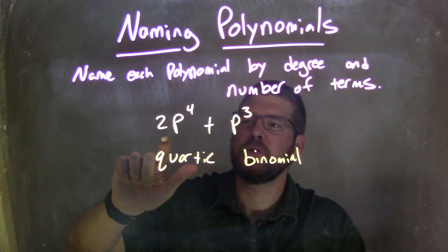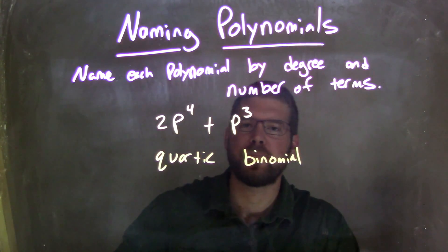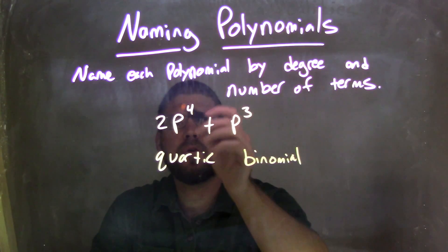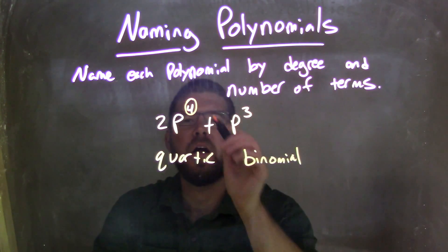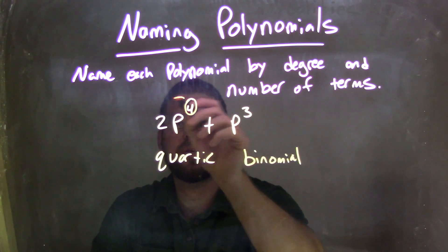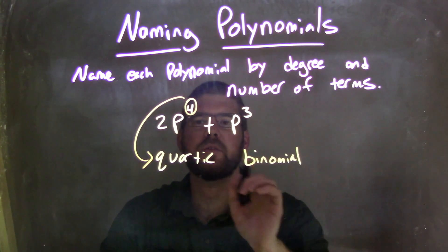So let's recap. We're given 2p to the 4th plus p to the 3rd. We want to identify this. And so we see the 4th degree right there. That 4th degree tells me it's a quartic function.